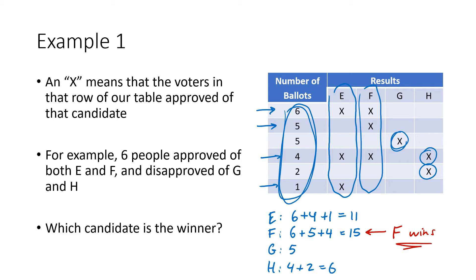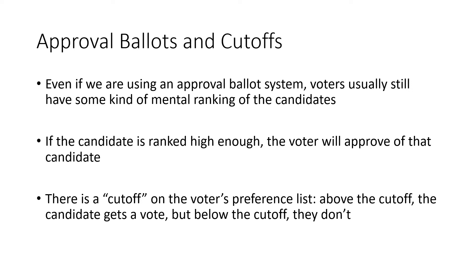One thing to think about with approval ballots is that voters still have some kind of preference order. What they're doing is thinking about their preference order and saying: for the candidates ranked high enough, I'll put an X next to their name; for candidates not ranked high enough, I won't put an X.